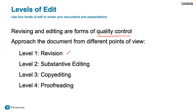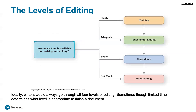The second level is substantive editing, where we pay attention to content, organization, and design of the document. Third, we get into copy editing to get it into a publishable place — it concentrates on revising the style for clarity, persuasion, and consistency at the sentence and paragraph level. Finally, proofreading is catching grammar mistakes, misspellings, and usage problems. Those are all different vantage points we want to be thinking about as we're getting a document ready.